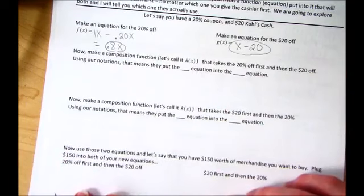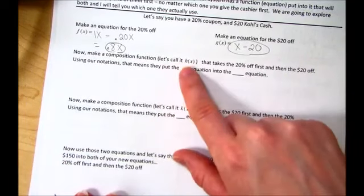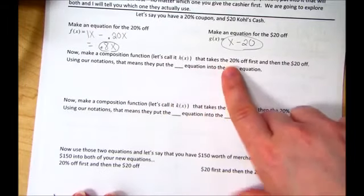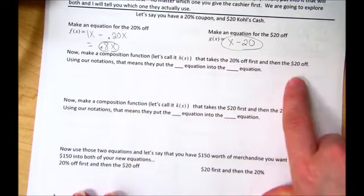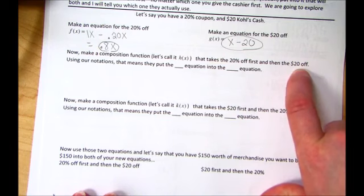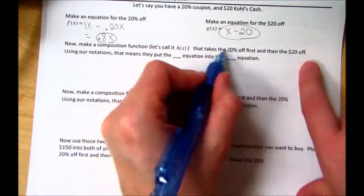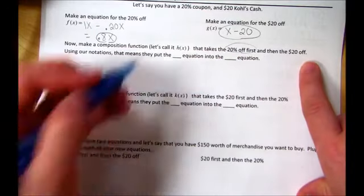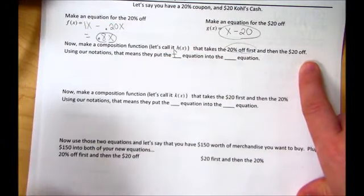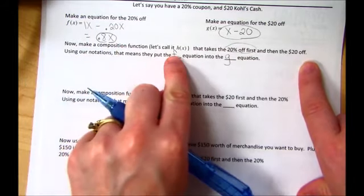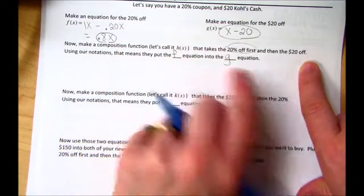Now we're going to make a composition function. We'll call this one H of X. So we used F, G, and now we're on H. We want to take the 20% off first, and then the $20 off. Using our notation, that means they put the 20% off first. That means they put the F equation into the G equation. So they took the percent equation into the cash off equation.